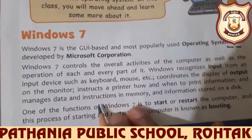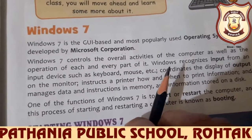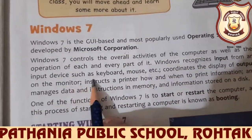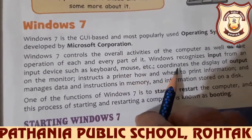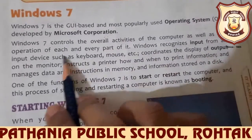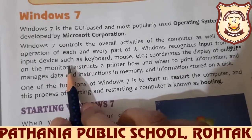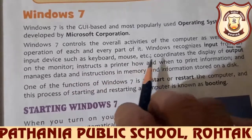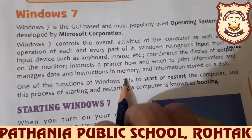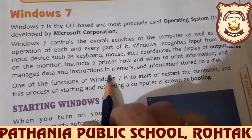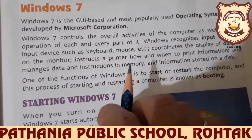How does it work? Windows recognizes the input — whatever input we give through input devices like keyboard, mouse, etc. Then it coordinates the display of output on the monitor. We can also take a printout from the printer. And if you want to store data, we use memory. We can save data and whatever instructions we want to save in the memory of the computer.